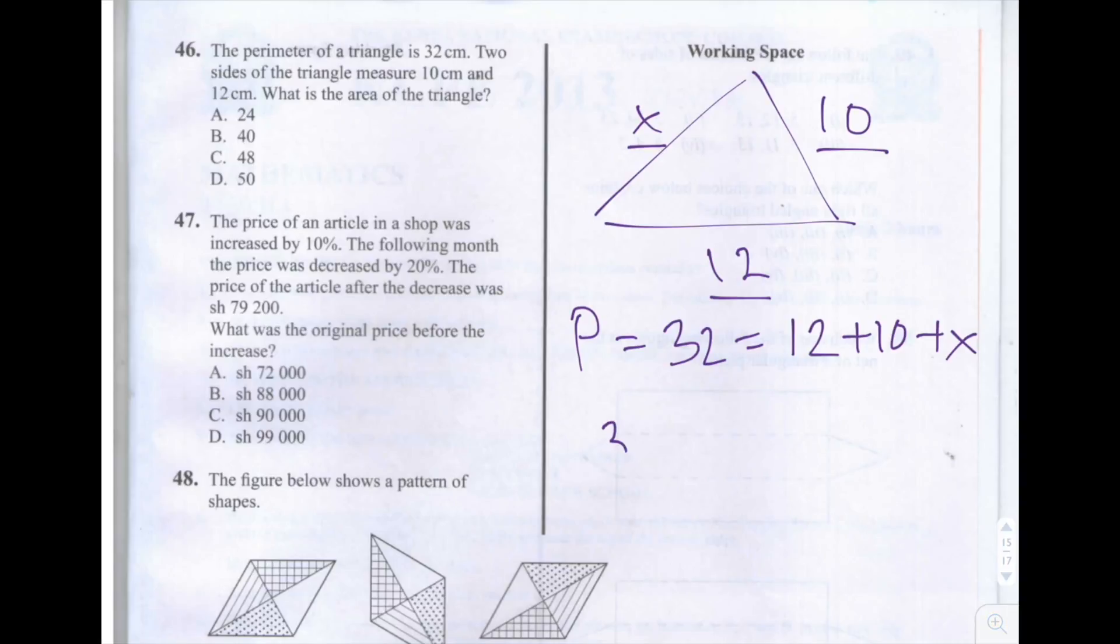So that's 32 is equal to 12 plus 10 plus X, which is the same as 32 is equal to 22, if we add together the 12 and the 10, plus X. So from here we can solve to find the value of X, and we get X is equal to 32 take away 22, which is equal to 10.